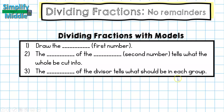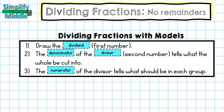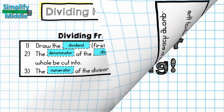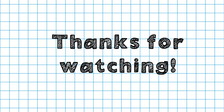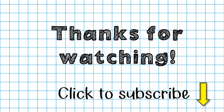Let's recap. When I'm dividing fractions with models, I will draw the dividend, which is my first number. Then the denominator of the divisor, which is my second number, tells what the whole will be cut into. And the numerator of the divisor tells what should be in each group. That wraps up our lesson. Thanks so much for tuning in. Feel free to click to subscribe to watch this and other lessons. Until next time!